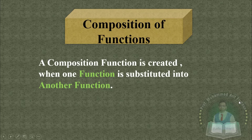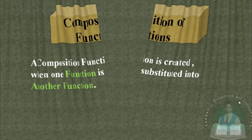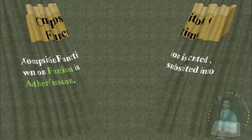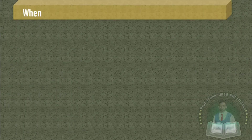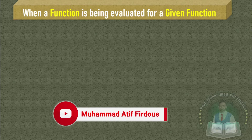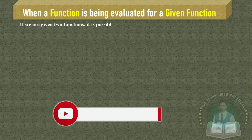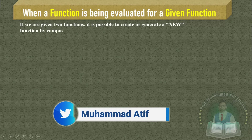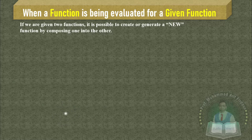Now how is this possible? I am going to give a simple example to explain this. When a function is being evaluated for a given function, suppose we are given two functions — it is possible to create or generate a new function by composing one into the other.